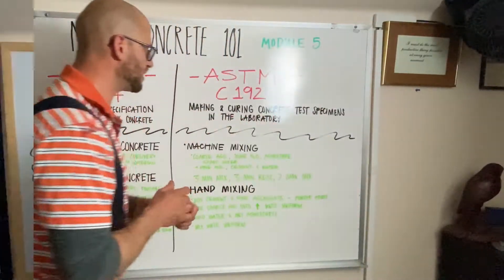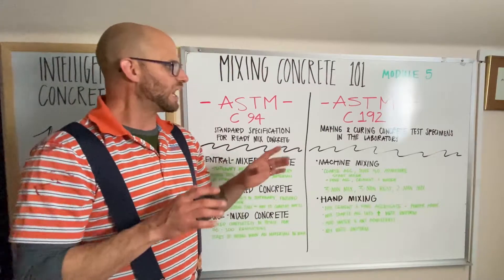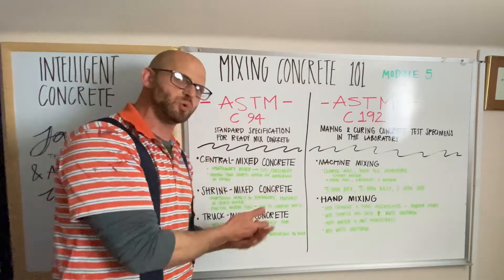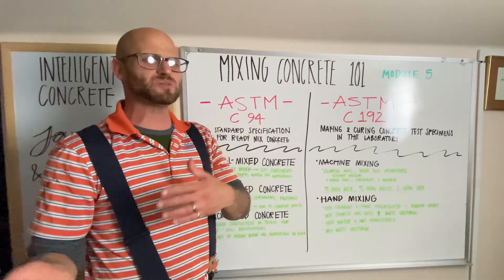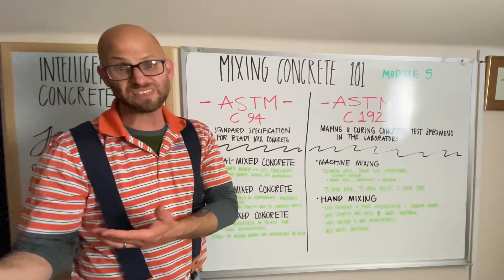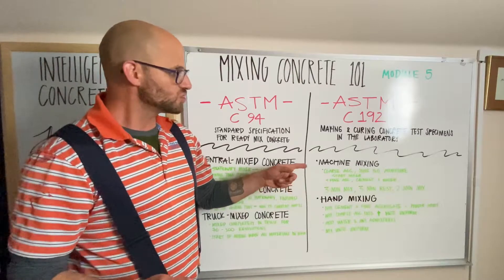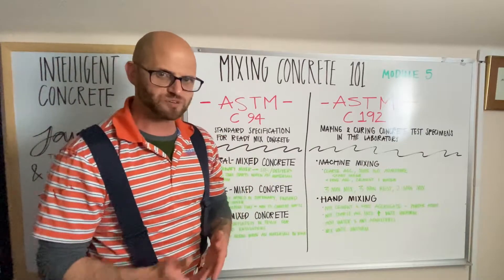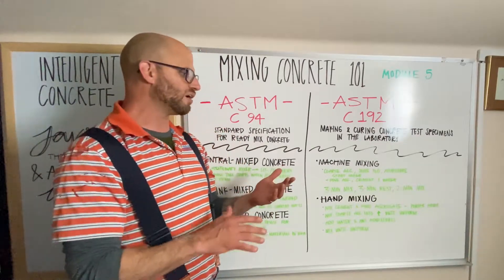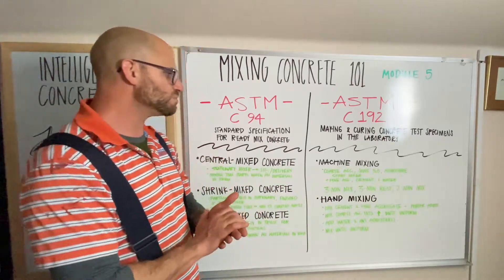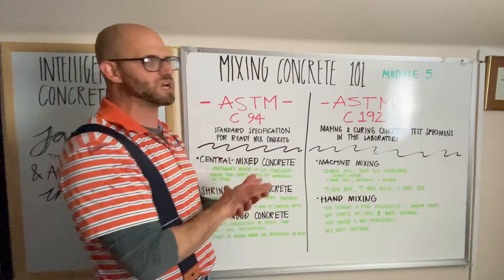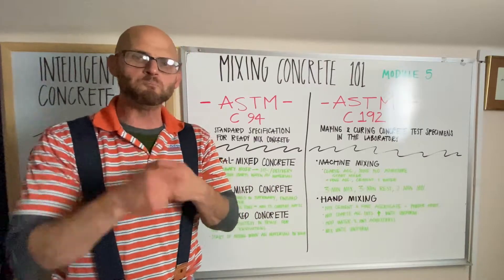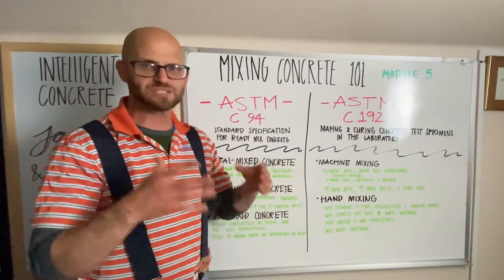ASTM C-192 covers making and curing concrete test specimens in the laboratory. When we do this, we're doing much smaller batches — instead of 20,000 to 40,000 pounds, we're doing somewhere between 150 and 1,000 pounds, maybe a little bit more. We traditionally use machine mixing, either our 3.77 cubic foot capacity mixer — Big Blue — or our nine-and-change cubic foot mixer, Big Red. The method is similar to what we do in ready-mix or dry batch, except we have a more regimented method of making concrete in our lab machines.